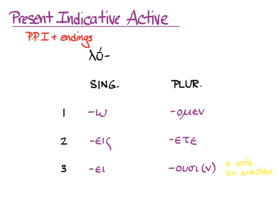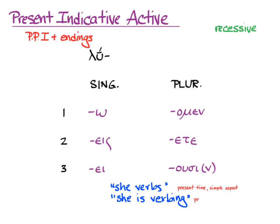Present indicative active, like most verb forms, has recessive accent. The default translation for the present indicative active is 'she verbs' for present time and simple aspect, or 'she is verbing' if you want to stress the continuous aspect of the present tense.